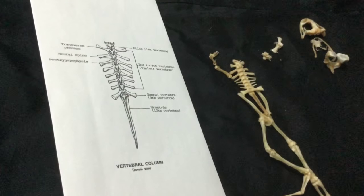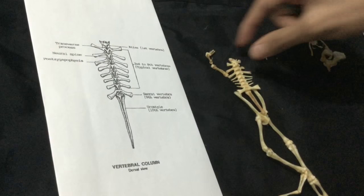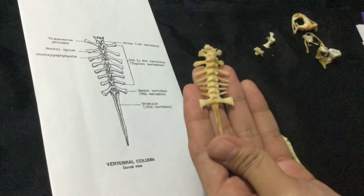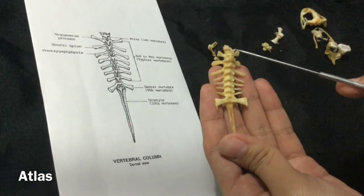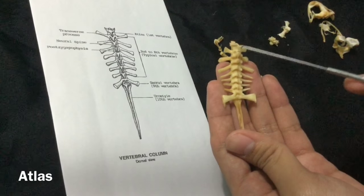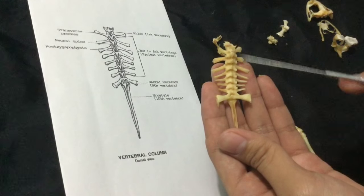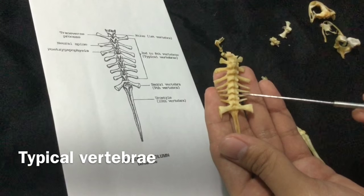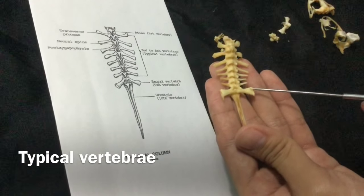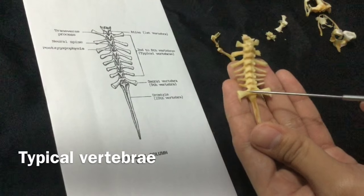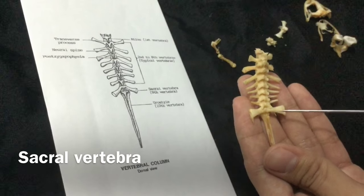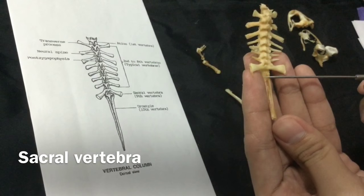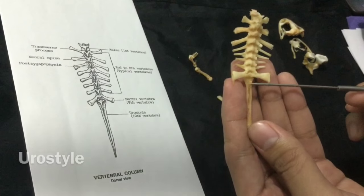Let's now move on to the vertebral column of the frog. We have the first vertebra, which we call the atlas, which is on top. And then the second to the eighth vertebra. These are what you call the typical vertebrae. This is what you call the sacral vertebrae. Then over here, which makes up the tail of the frog, this is what you call the urostyle.